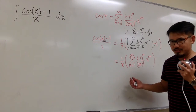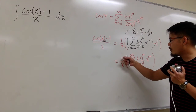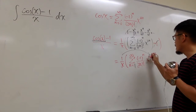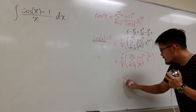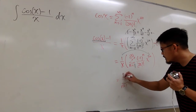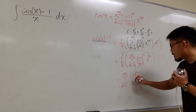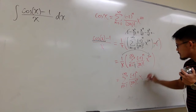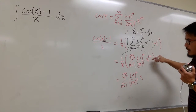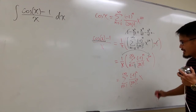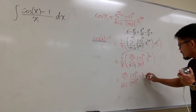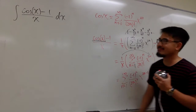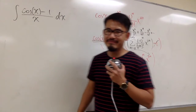Is there anything that we can do with this? This is 1 over x, and then this is x to the 2n power — we can distribute these together. You see that this becomes sigma when n goes from 1 to infinity, negative 1 to the nth power over 2n factorial, and x to the 2n power divided by x to the first power, so we have x to the 2n minus 1 power. This is the infinite series we are going to use for the integral.